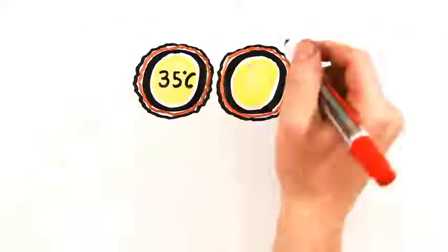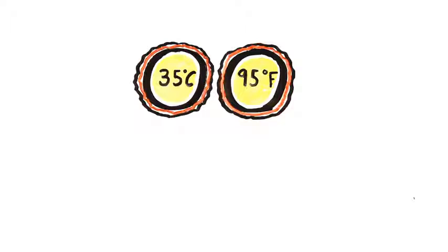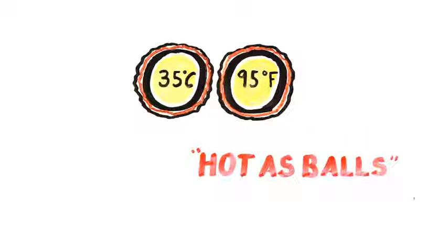Hot outside? The resting temperature of testicles is around 35 degrees Celsius or 95 degrees Fahrenheit, meaning on a hot day, it's literally hot as balls.